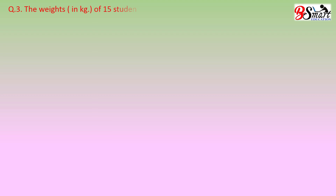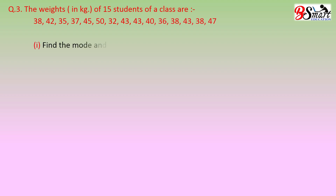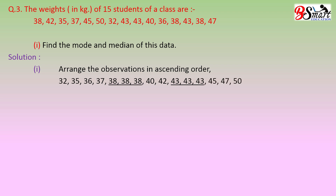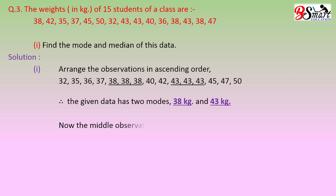Question Number 3. The weights in kg of 15 students of a class are given. Sub question 1: find the mode and median of this data. We arrange the observations in ascending order. We observe that 38 and 43 appear the maximum number of times — 3 times each. Therefore, the given data has 2 modes: 38 kg and 43 kg.